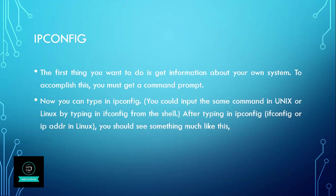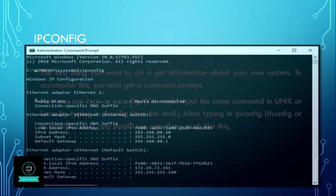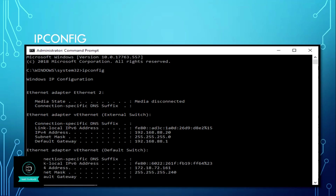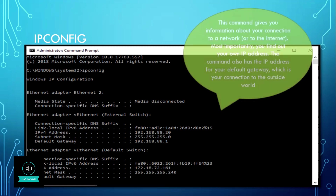You could input the same command in Unix or Linux by typing in ifconfig or ip addr in Linux. After typing in ipconfig, you should see something much like this. In this you can check your IPv4 address, subnet mask, and default gateway. This command gives you information about your connection to a network. Most importantly you find out your own IP address. The command also shows the IP address for your default gateway, which is your connection to the outside world.